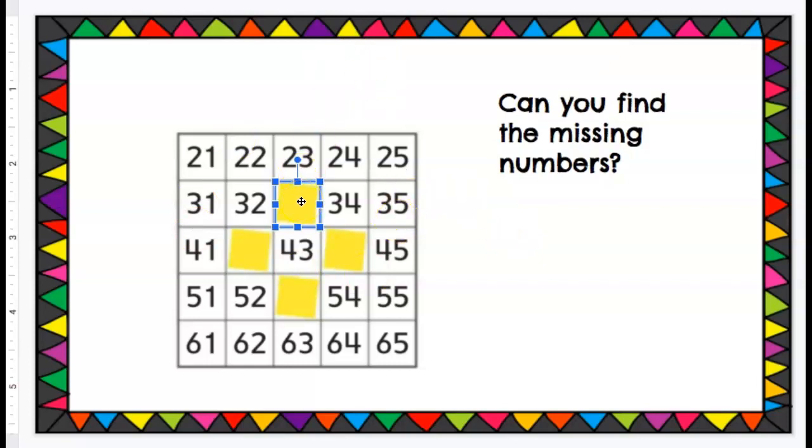Does that make sense? They are 30, and then what goes here? Oh, let's double check our column. 33, let's see if that makes sense.